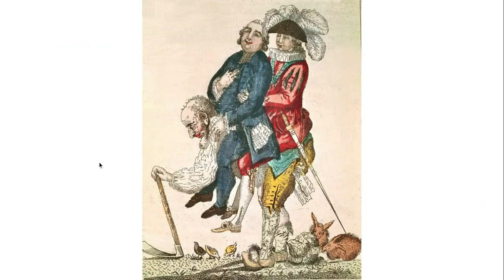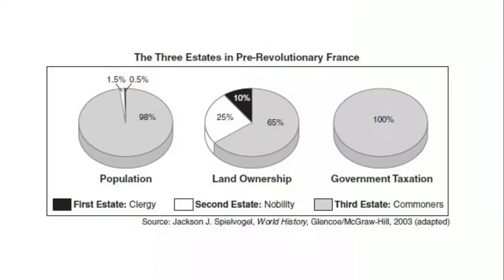As you can see in this political cartoon, the first and second estates are riding — quite literally and figuratively — on the back of the third estate. This cartoon does a really good job; it's very on the nose about the illustrator's point of view. Here is a breakdown of population, land ownership, and taxation among the three estates: 98% of the population is the third estate, they own about 65% of the land, but pay 100% of the taxes. The first and second estates have more money and aren't being taxed — a lot of people in the third estate saw this as unfair.